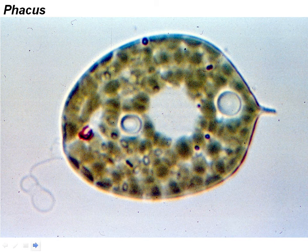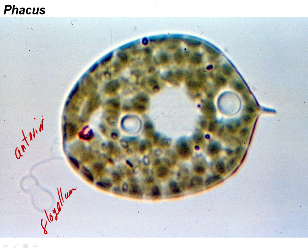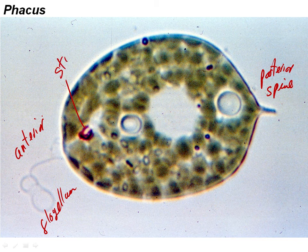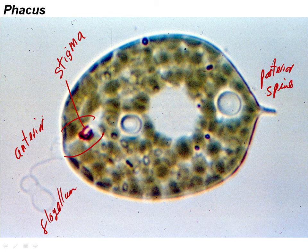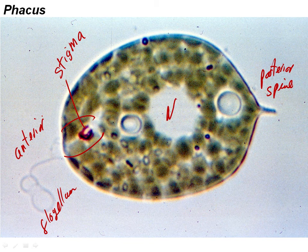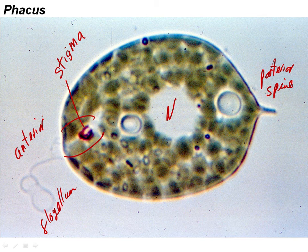Here's Phacus. You can see the flagellum, which means this is the anterior end. Again there's a posterior spine. There's the stigma, sitting up near the invagination. There's the nucleus. Phacus is really cool because it's a flat organism. When you see them swimming in the lab, you'll see this organism swimming around and it'll suddenly flip on its side — it's a flatfish. It's completely flat and it'll flip like that. Phacus is very distinctive because of its flatness.